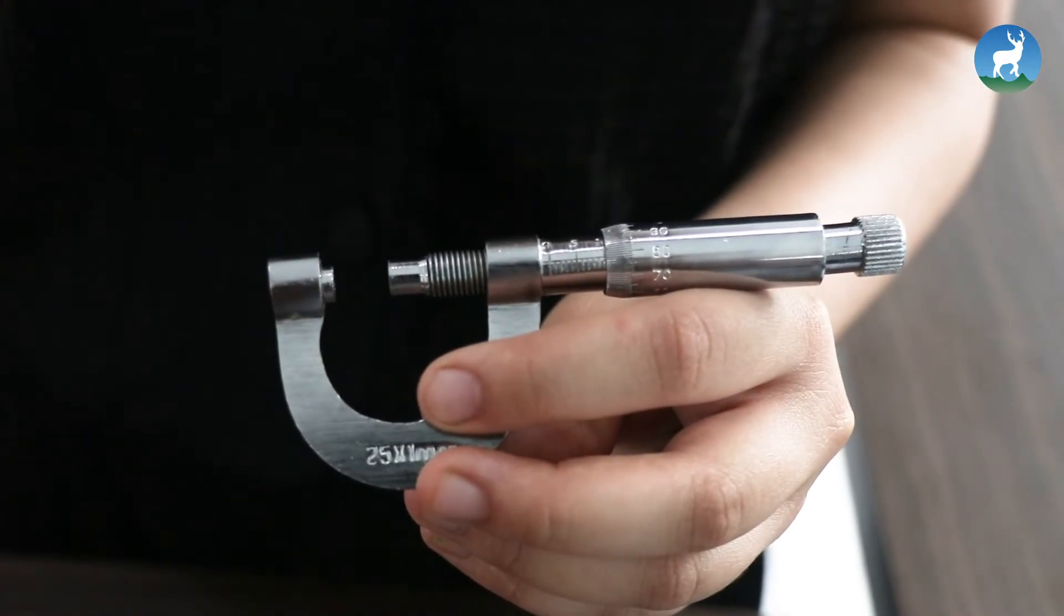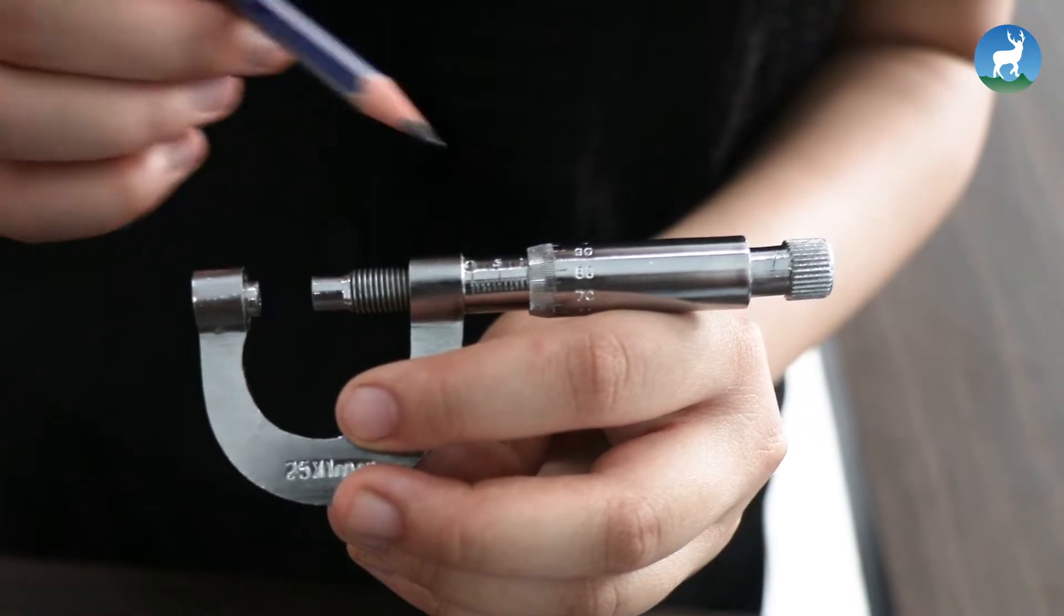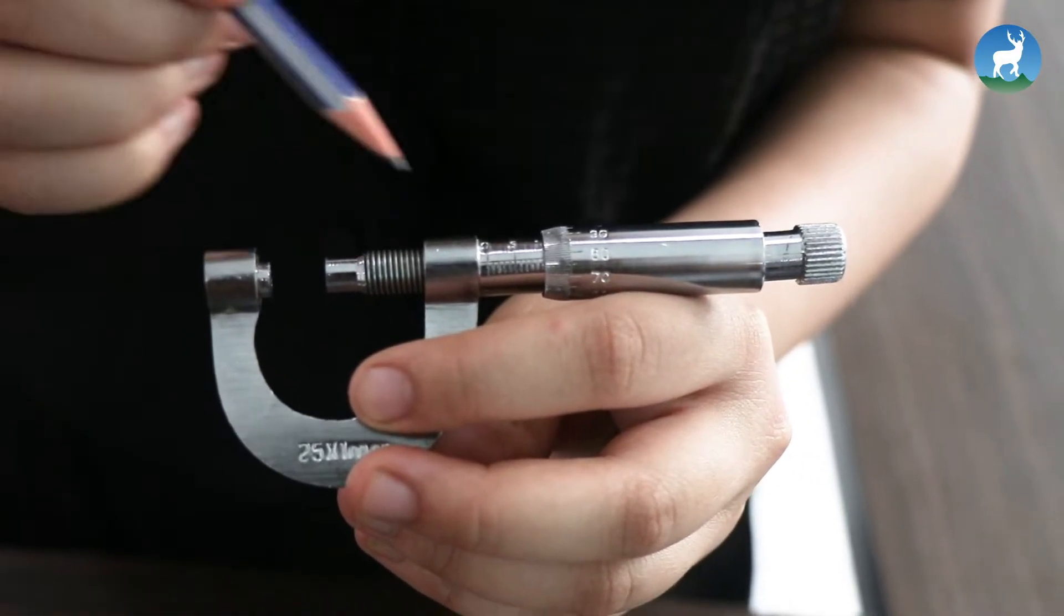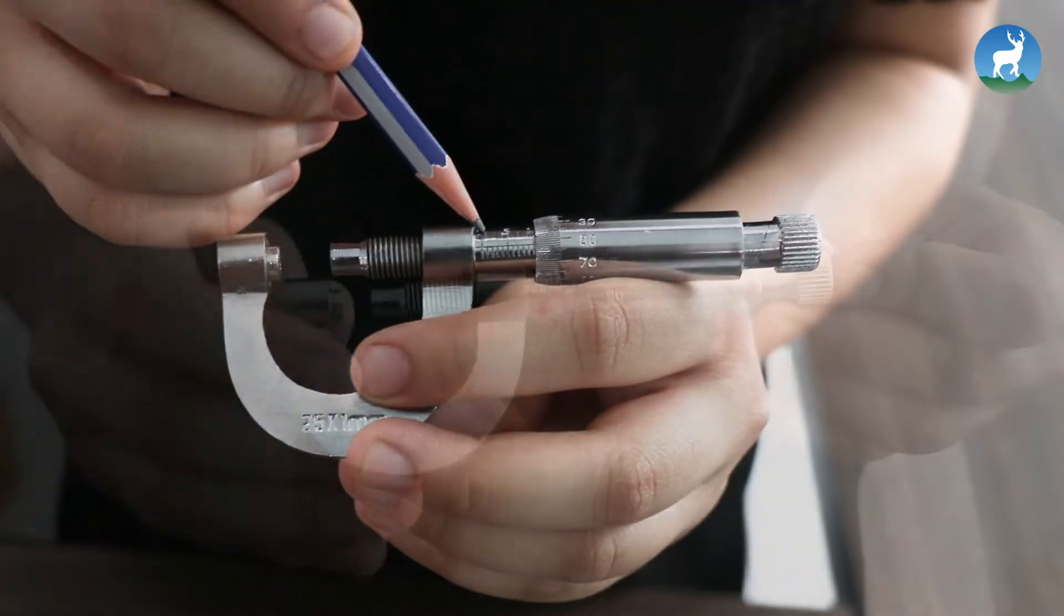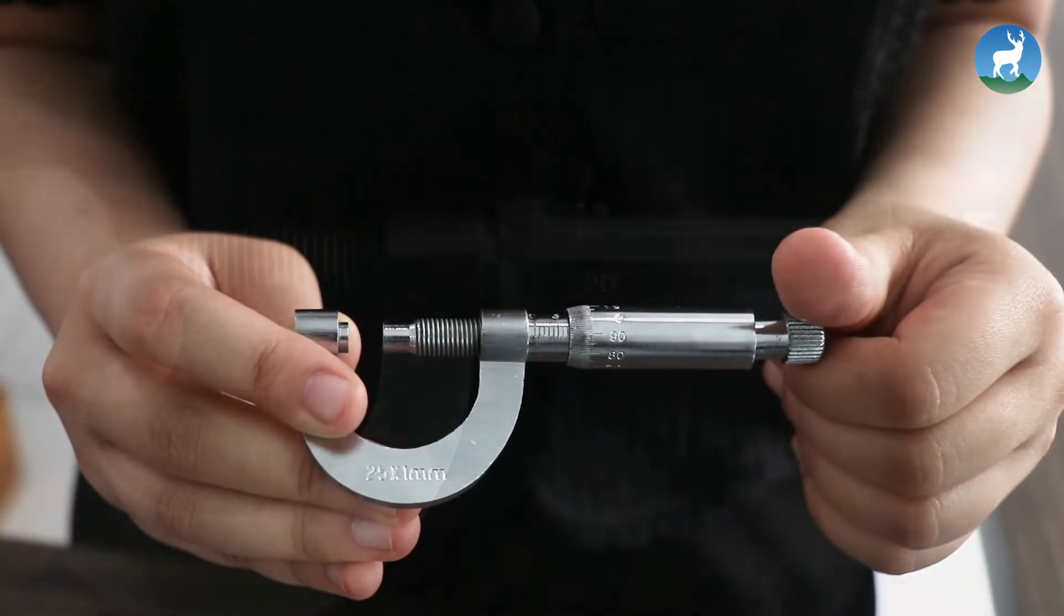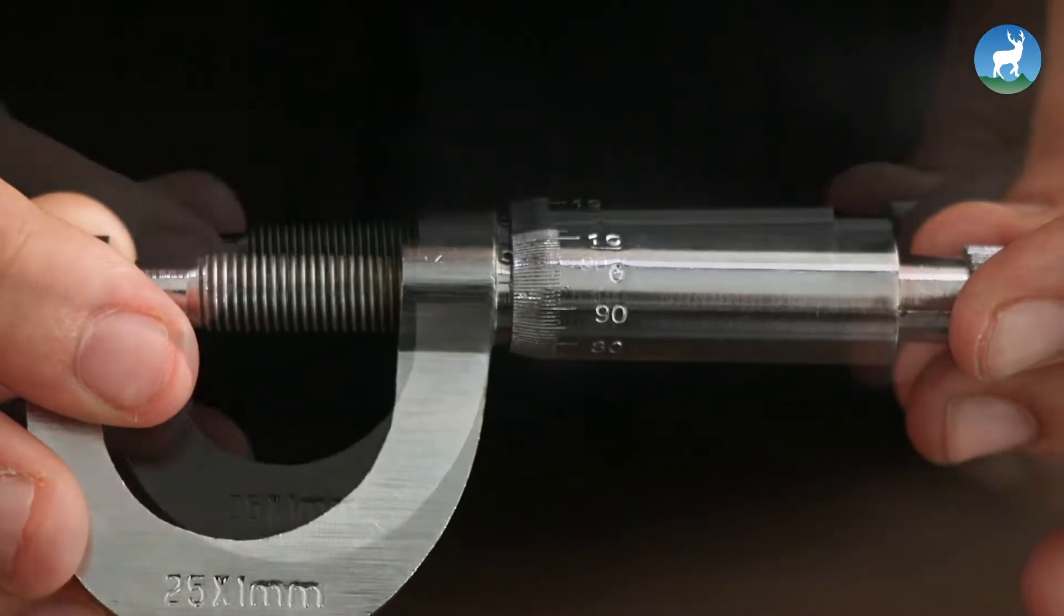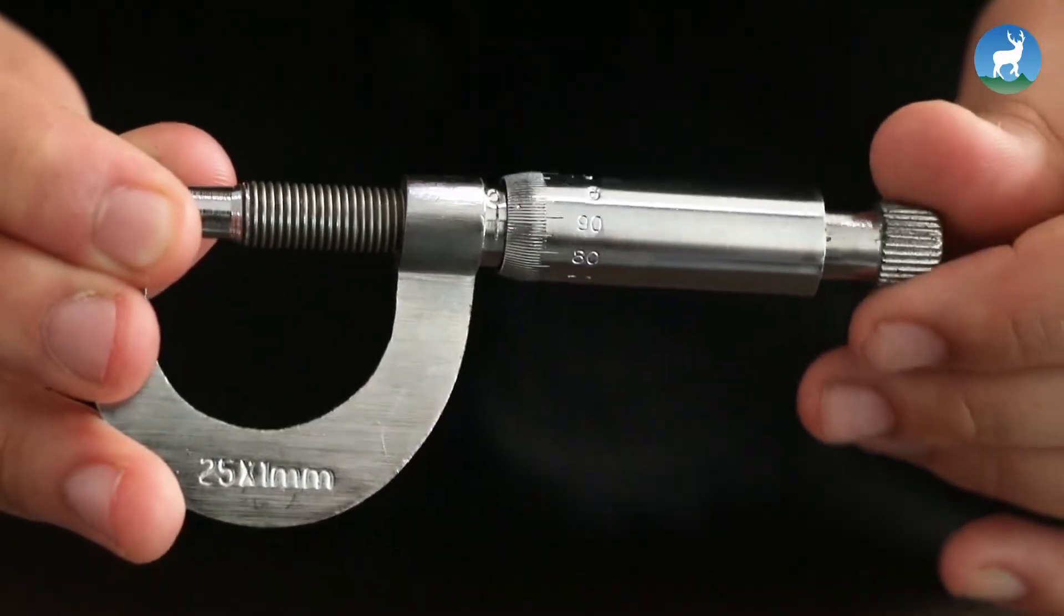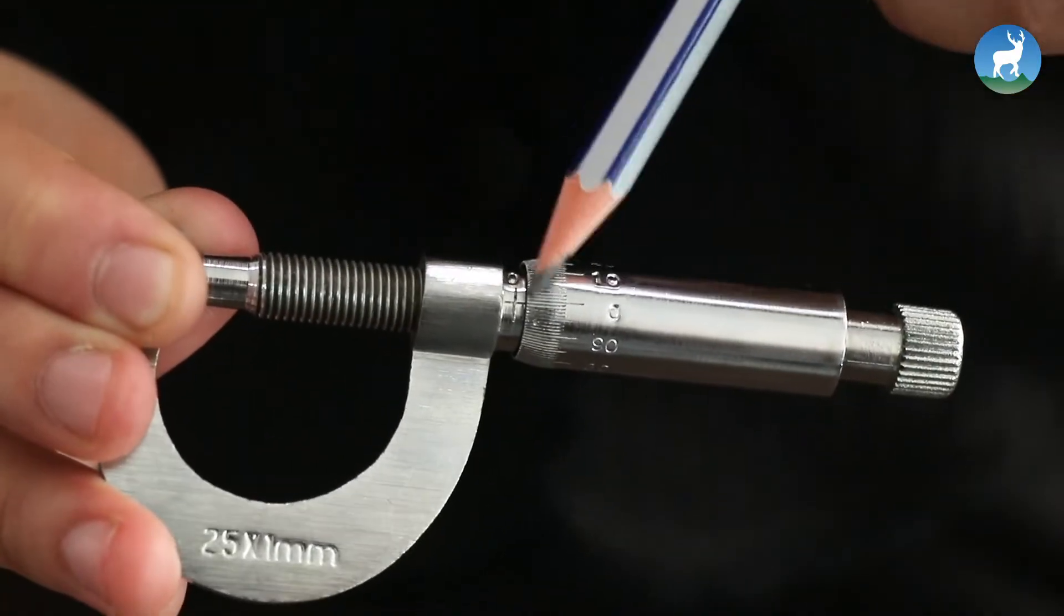In mean scale, the value of 10 mean scale divisions is 10 mm. Similarly, the value of one mean scale division is 1 mm. In circular scale, number of division in circular scale is 100. Pitch of the screw is linear distance traveled by the screw in one complete rotation, which is 1 mm.